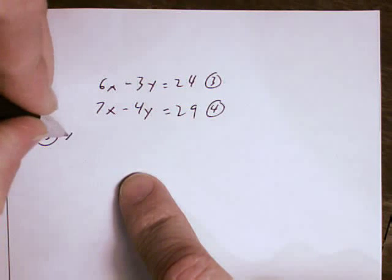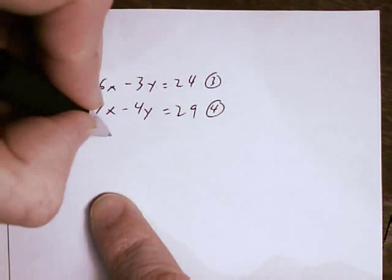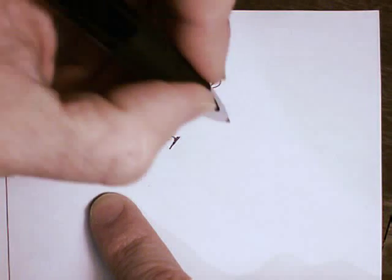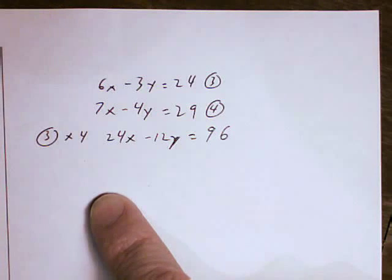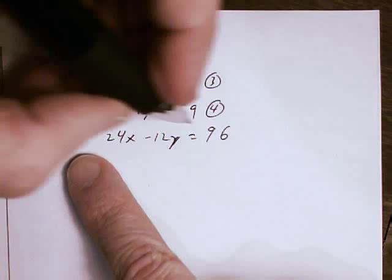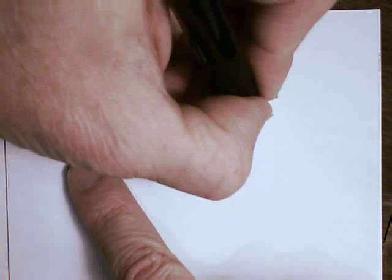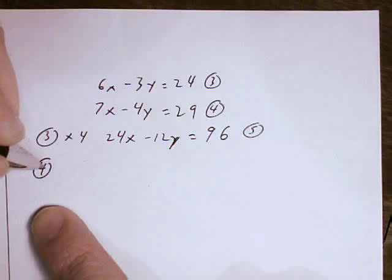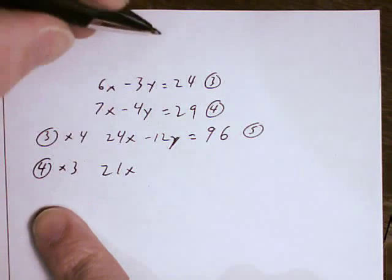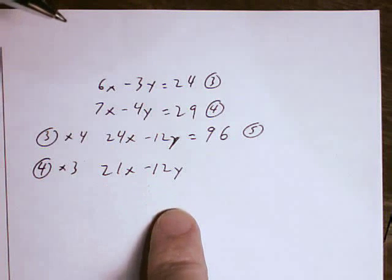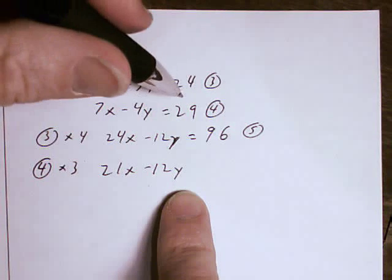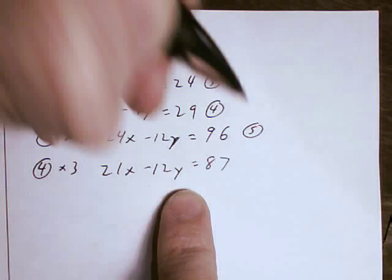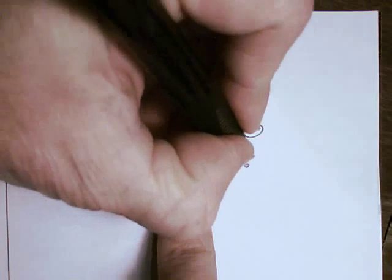So equation 3 times 4 will give me 24x minus 12y equals 96. Again, since I multiplied it by a different number, I'm going to re-label this equation. So this is now equation 5. Now equation 4 times 3 gives me 21x minus 12y and 3 times 29 gives me 87. That's going to become equation 6.